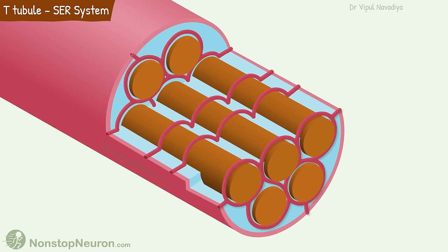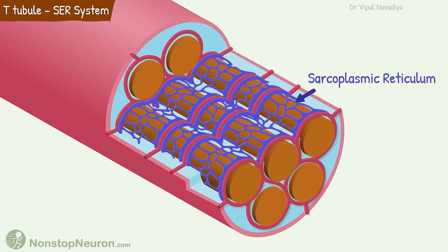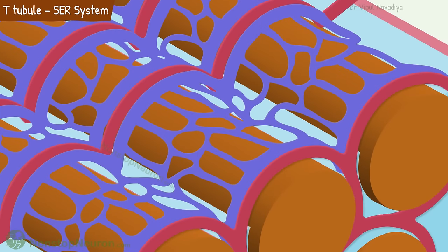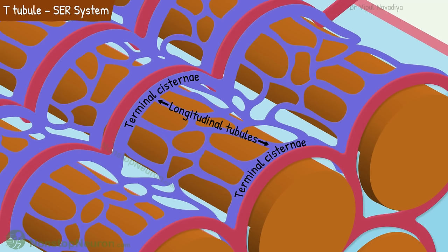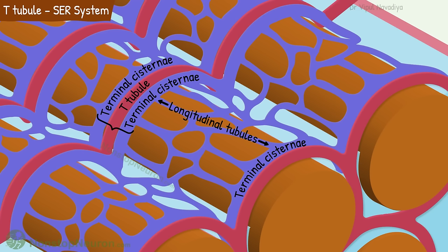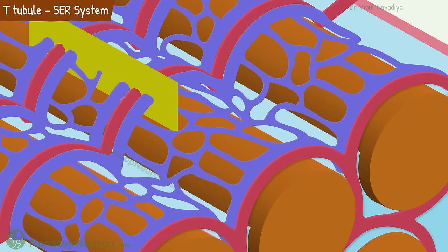The other structure surrounding the myofibril is the sarcoplasmic reticulum — it is a special type of endoplasmic reticulum, and like any endoplasmic reticulum, it stores calcium. It is composed of two major parts: longitudinal tubules and terminal cisternae. Longitudinal tubules surround most of the surface of the myofibril. Terminal cisternae associate with T-tubules — each T-tubule has one terminal cisternae on each side. This combination of a T-tubule and two neighboring terminal cisternae is called a triad junction, or simply a triad. If we simplify this three-dimensional structure into two dimensions, it would look like this.